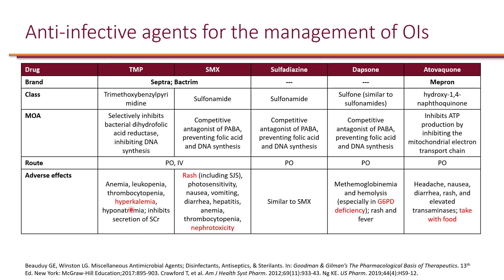Other adverse effects are not as common for trimethoprim. For sulfamethoxazole, it is a sulfonamide, and for sulfonamide drugs in general, you want to think about skin reactions. Rash is the most common and can sometimes be severe — Stevens-Johnson syndrome can occur, and though rare, it can be fatal. Other skin-related reactions include photosensitivity. In addition, sulfonamides can also cause GI adverse effects: nausea, vomiting, and diarrhea.